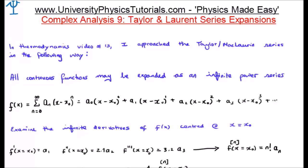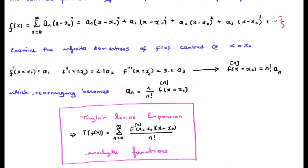In thermodynamics video 13 I used the following approach. All continuous functions may be expanded as an infinite power series. Let's examine the infinite derivatives of f(x) centered at x equals x_0. The first derivative is going to be a_1, because this term here goes to zero, and all other terms will still have an (x minus x_0) component which will go to zero when we let the function go to x_0.